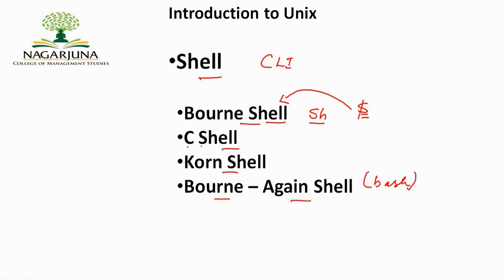The C shell does not have the programming capabilities of the Bourne shell but is better for interactivity. It uses the command 'csh' and gets its name because its syntax resembles the C programming language. The C shell is prompted with a percentage symbol. The Korn shell has the programming capacity of the Bourne shell as well as the interactivity of the C shell, and uses the command 'ksh'.